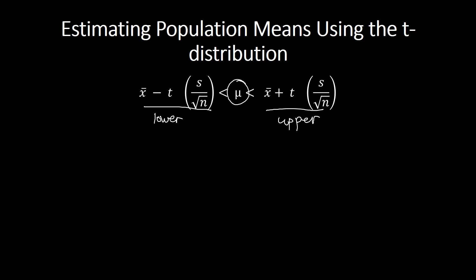We can combine them into a single formula: x-bar ± t times s over square root of n. This is what your teacher may refer to as the confidence interval formula. Let's get to know all the components in this formula.